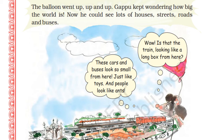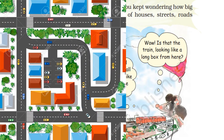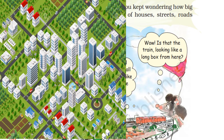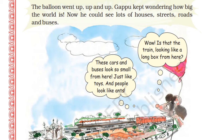The balloon went up, up, up and up. Gappu kept wondering how big the world is. Now he could see lots of houses, streets, roads and buses. While observing from the top view, the city is looking like this. Here we can see the buses — those are very small. These cars and buses look so small from here, just like toys.